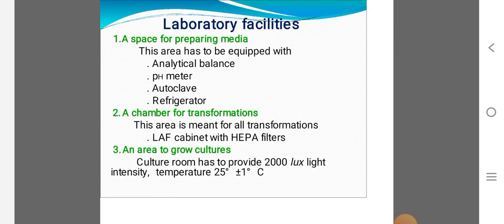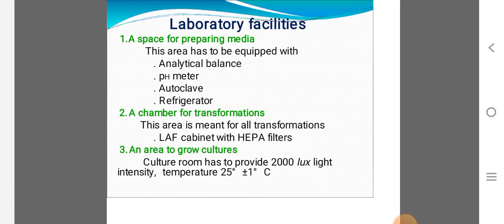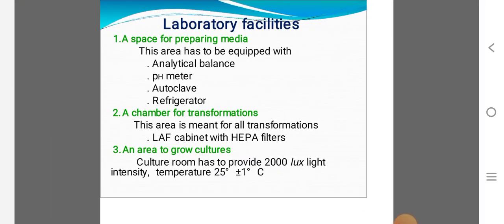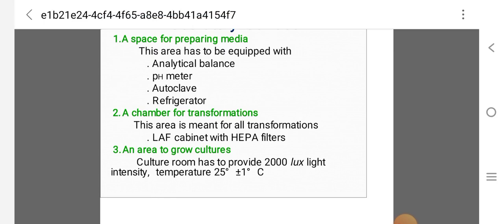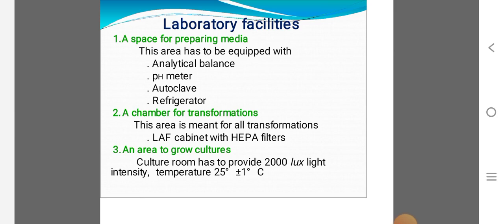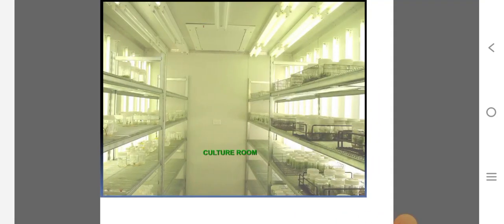Second one is a chamber for transformation. Transformation conducted in laminar airflow particular cabinet. In this laminar airflow, HEPA filters can be used. They are high efficiency particulate air filters. And third one is an area to grow cultures.